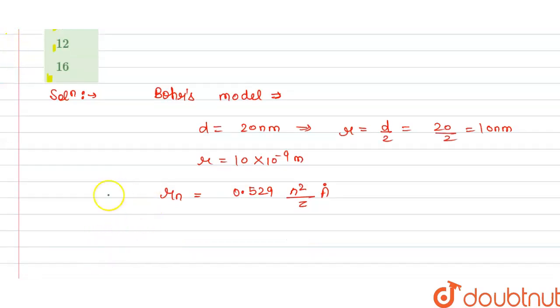So we have the radius is 10, and we know that 1 nanometer equals 10 angstrom. So we have our radius is 10 multiplied by 10 angstrom, and this is 0.529 n squared.